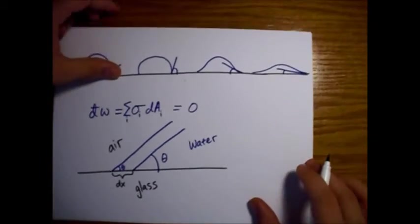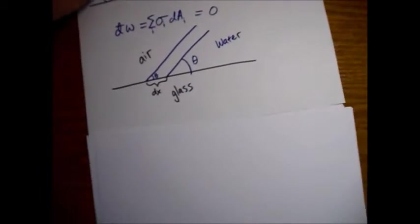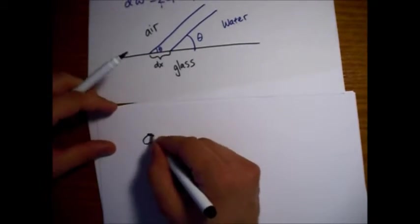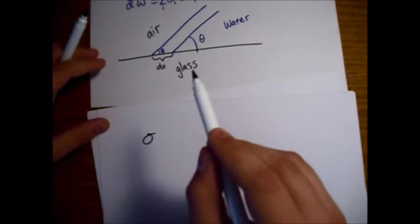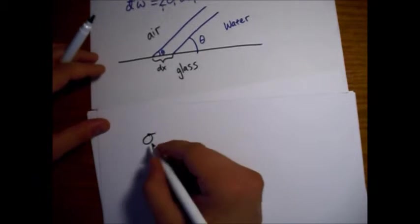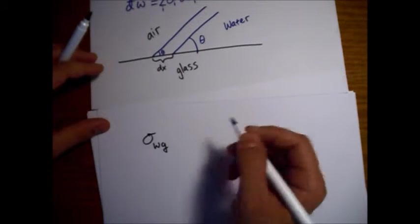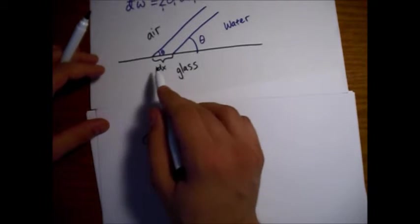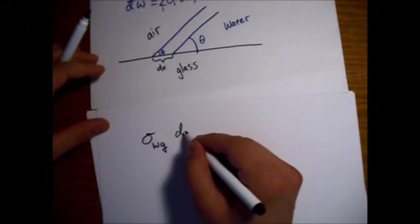So, what we're doing is looking at this sum. So, we have our surface tension for water and glass. We'll just call it WG. It's going to increase the dx.